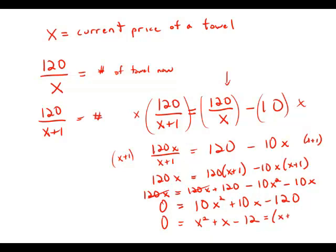That factors to x plus 4 and x minus 3. And so, x plus 4 times x minus 3 equals 0. That means that x plus 4 equals 0 or x minus 3 equals 0. x equals negative 4. Well, that doesn't make sense for the price of a towel. So, we won't use that. x equals 3.